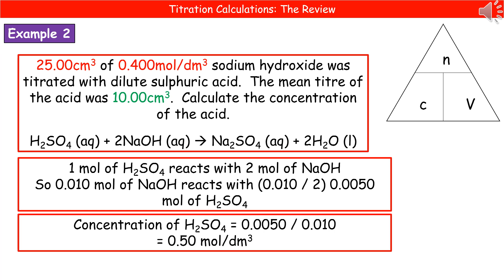Then we need to look at our balanced equation. In this case, we've got two moles of sodium hydroxide reacting with one mole of sulfuric acid. We've worked out that 0.010 moles of sodium hydroxide is reacting. Applying the same proportions: if two moles of sodium hydroxide react with one mole of sulfuric acid, we divide 0.010 by two to give us 0.0050 moles of sulfuric acid. Then the concentration is 0.0050 divided by 0.01, giving us 0.5 moles per decimetre cubed.